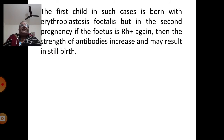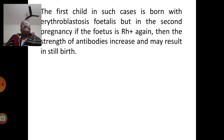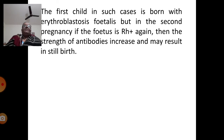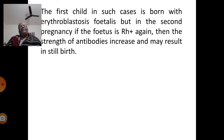The first child, in cases where the mother is Rh negative and the fetus is Rh positive, is born with erythroblastosis fetalis. But if untreated, and in the second pregnancy the fetus is again Rh positive, the strength of antibodies increases and may result in stillbirth. To avoid these medical complications, once doctors know the pregnant woman is Rh negative and the fetus is Rh positive in a second pregnancy,